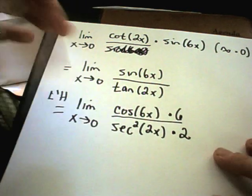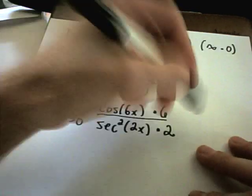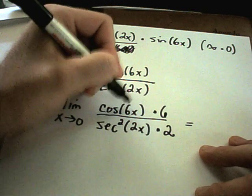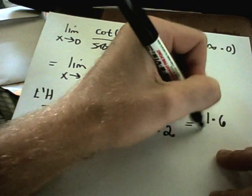And as x approaches 0, you're going to get cosine of 0. Well, cosine of 0 is 1. So you'll get 1 times 6.